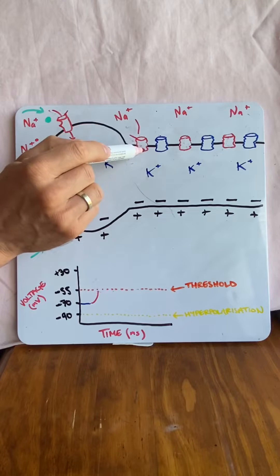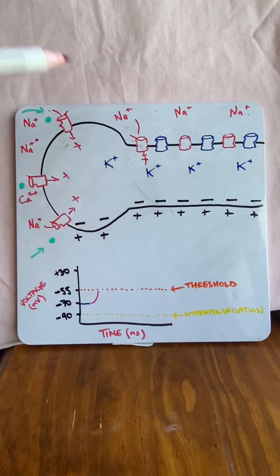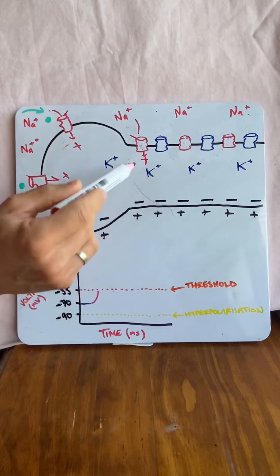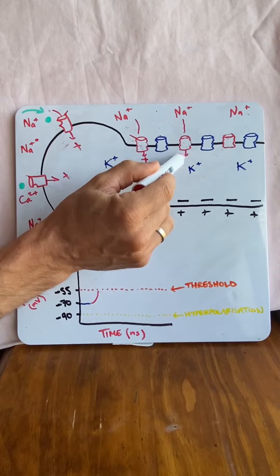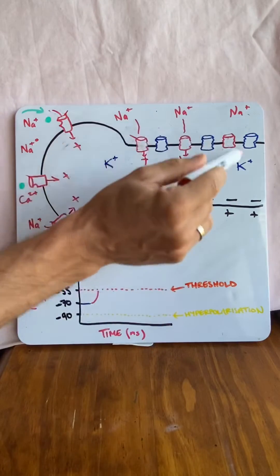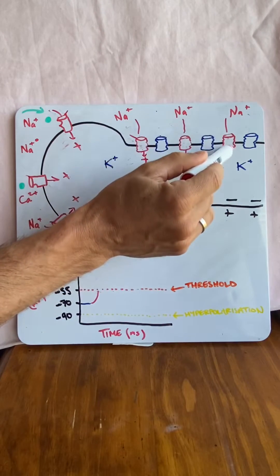If this channel opens up, positive sodium will move into the cell. Now, if enough positive sodium moves in that it goes from negative 70 to negative 55 in this area, it's going to open up the next channel of sodium. Again, if it hits negative 55 in this area, the next sodium channel.